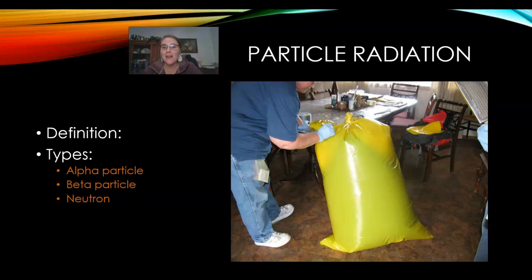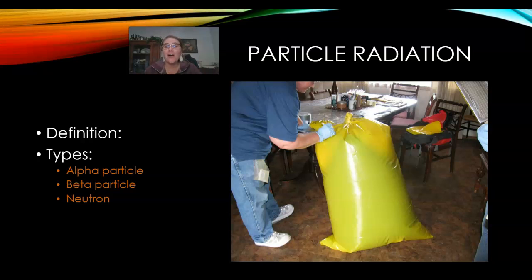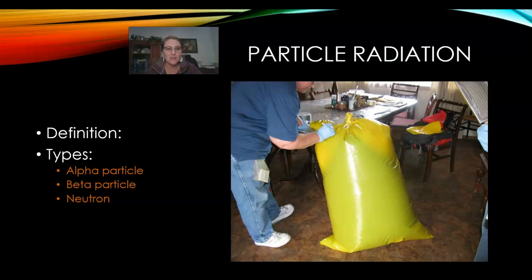The next morning, the Department of Energy was at our house scanning things and confiscating them because they had too high of radiation. So all those particles were all over his stuff. This is a bag of the contaminated material that they took from his home. They replaced all of it. And he had a Mustang — they had to basically take his Mustang away and replace the seat in his car because it had too much radiation.